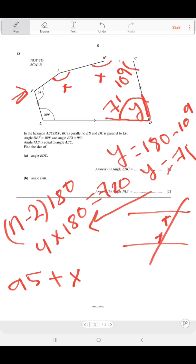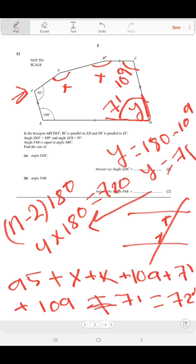The angle sum of all angles add up to 720. So the first angle 95 plus X plus X plus 109 plus 71 plus 109 plus 71 equals 720. Now it's a simple linear equation you can solve it and find the value of X, which equals 168.